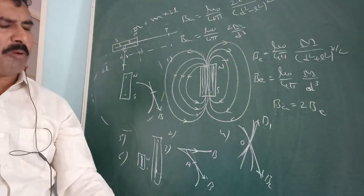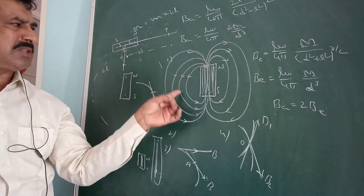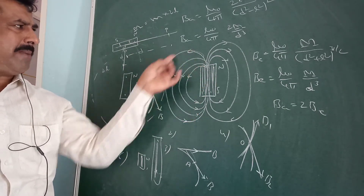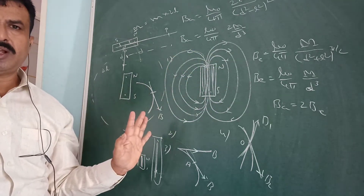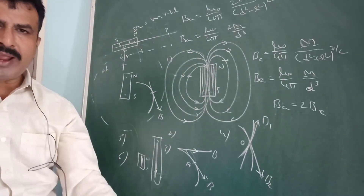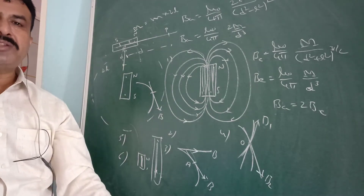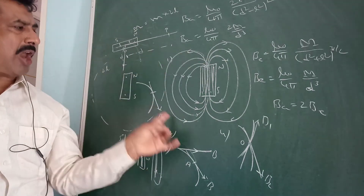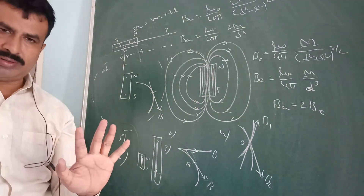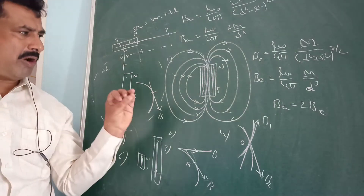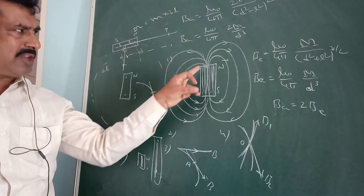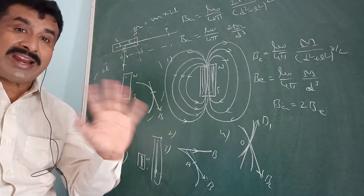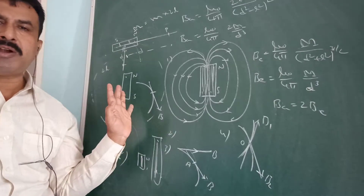The second property: magnetic field lines appear to start from the north pole and end on the south pole. Actually, they do not have any starting point or ending point — they are continuous closed loops.